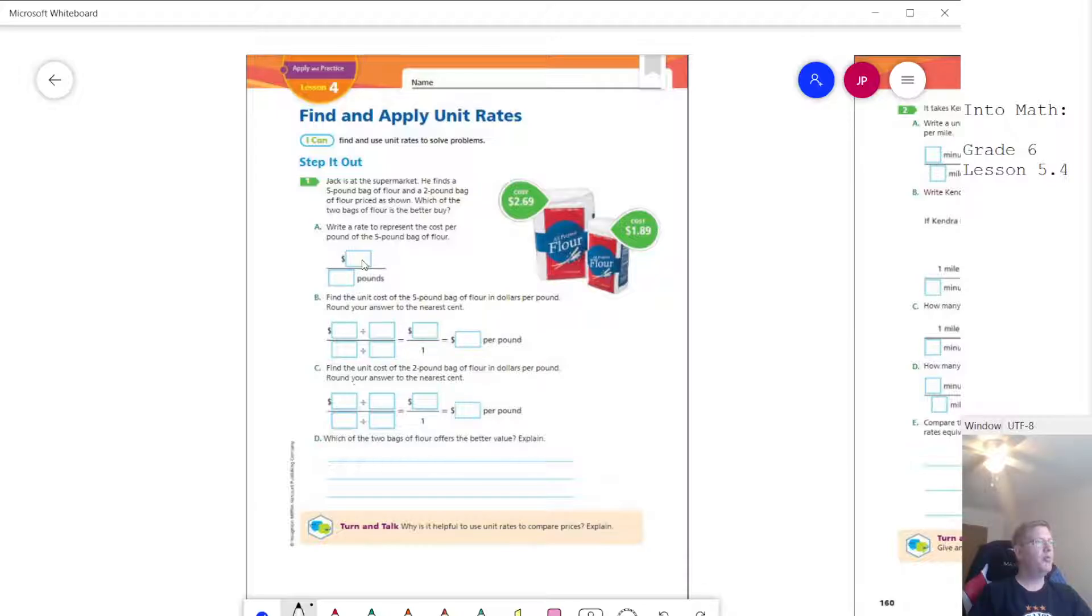So to start with, we are working with $2.69 for the five-pound bag of flour and we are going to divide that by five to find the total amount. We're going to divide both of these numbers by five. It might take me just a moment, so I'm going to pause the video while I type all this out and then I'll be right back with you.